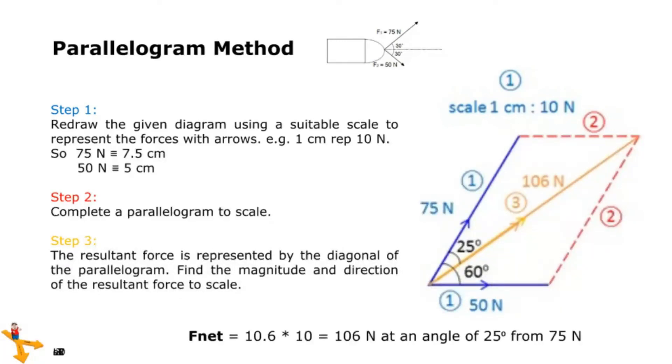Measuring the length of the yellow line, we get F net equals 10.6 times 10 equals 106 N at an angle of 25 degrees from 75 N.